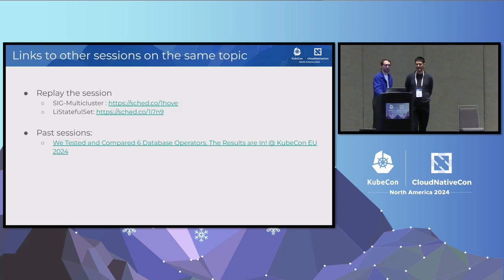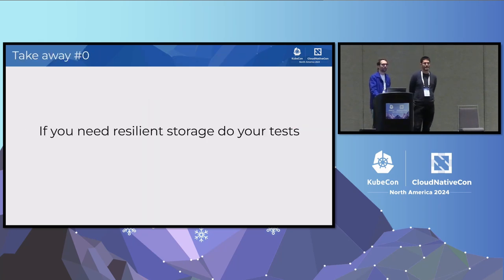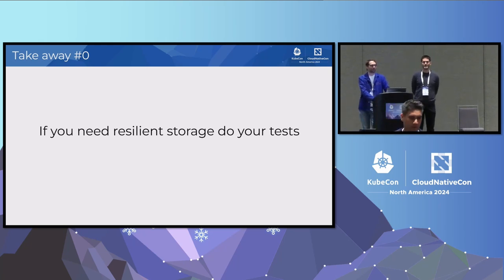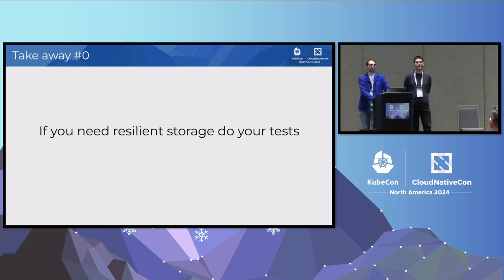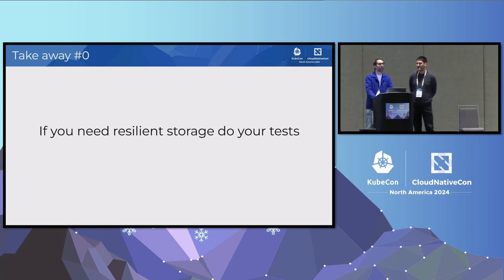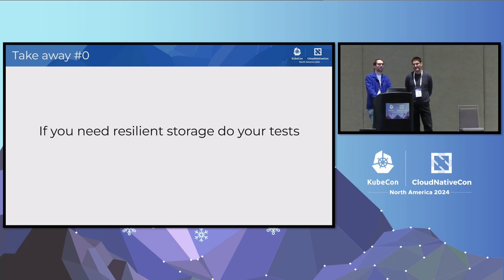That's a wrap — opening it up to questions now. For the third-site witness, what is the suggested ETCD latency between the other two sites? That's a great question. In ETCD the latency can be fairly high, but I'd recommend checking with your Kubernetes distribution. In OpenShift, for example, it's around 50 milliseconds, but it depends on cluster size, load, and many other factors, including bandwidth. Test very carefully before you scale.